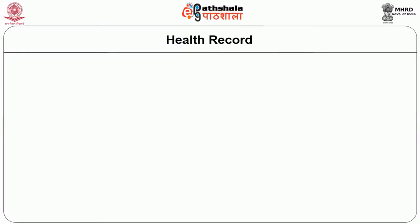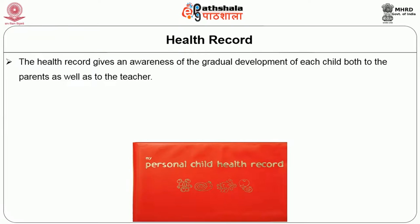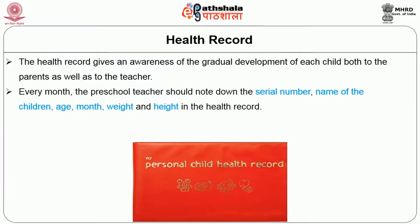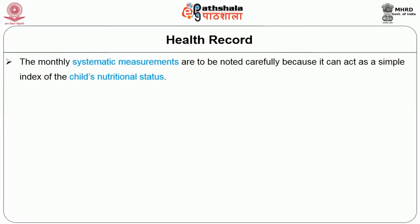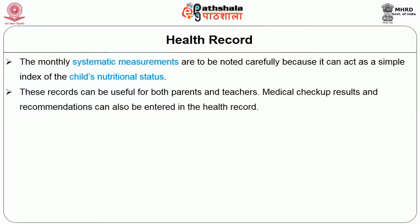The Health Record gives an awareness of the gradual development of each child to both parents and teachers. Every month the preschool teacher should note down the serial number, name of the children, age, month, weight and height in the Health Record. The measurement should be taken once a month at the same hour of the day under the same conditions of clothing and eating time. The monthly systematic measurements can act as a simple index of the child's nutritional status.